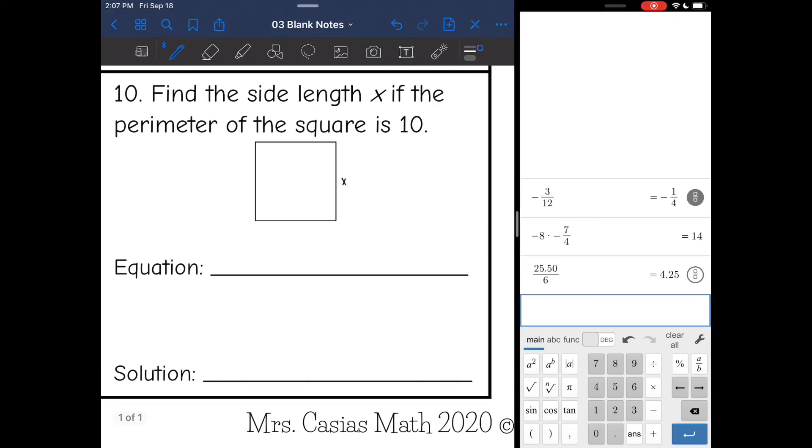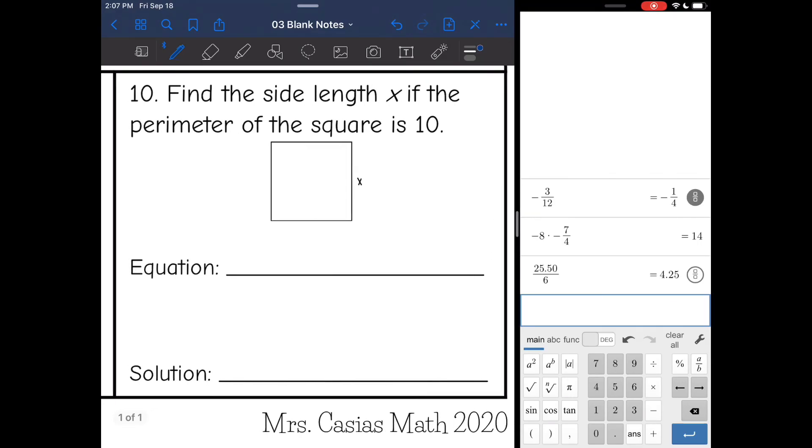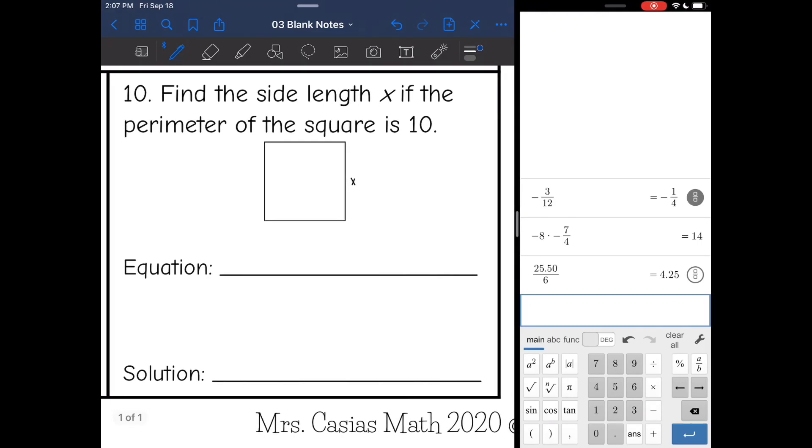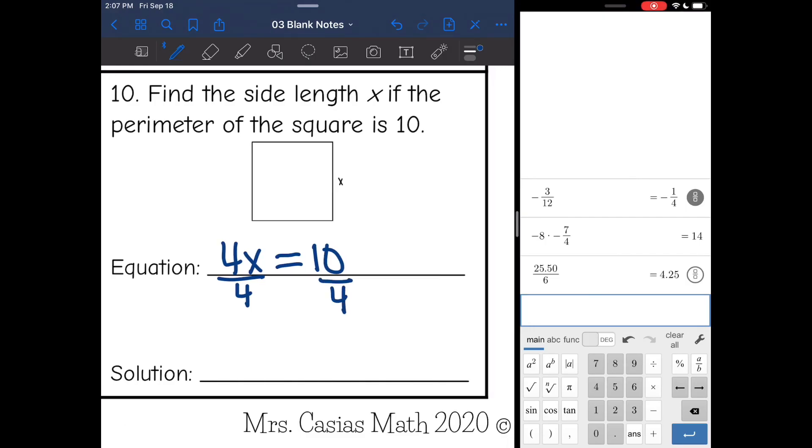Number 10, it says find side length x if the perimeter of the square is 10. I have 4 sides on this square. And when I multiply one side by 4, that will give me the perimeter of 10. So now I'm going to divide by 4. And 10 divided by 4 is 2.5, so x is 2.5.